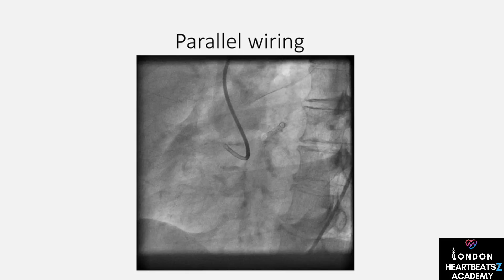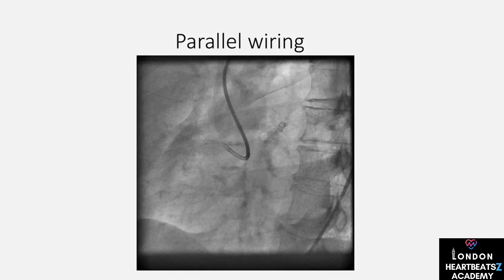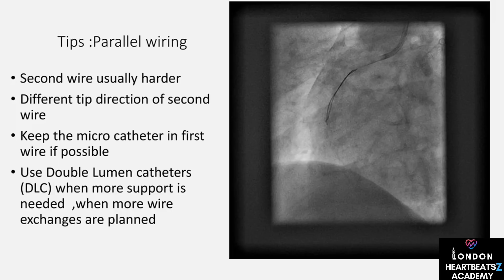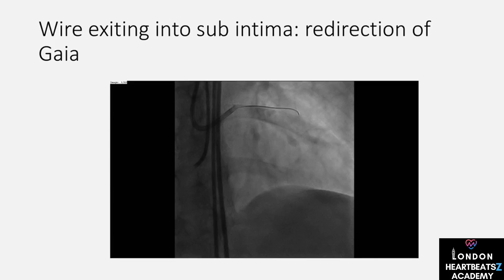When it comes to penetration, we use harder, tapered tip guide wires like the Confianza Pro 12 — it's like using a chisel to break through tough rock. We identify the direction of penetration carefully, using it for straight, hard, short distances. We ensure strong backup and use double-lumen catheters for added support. Remember: no rotations, just a strong push.